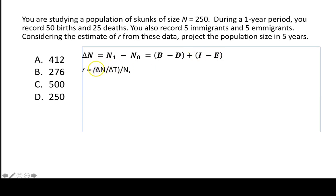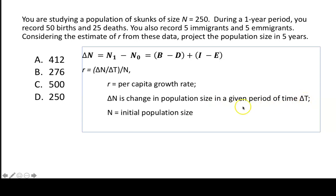Next we want to look at this per capita growth rate represented by r. The way we calculate that is this change in population size divided by the change in time, divided by the original population size. So r is the per capita growth rate. Delta N is the change in population size in a given period of time delta T, and N is the initial population size.